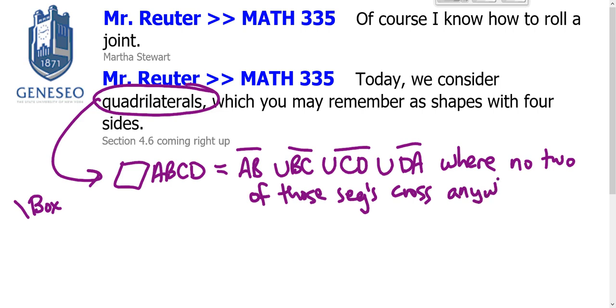Cross anywhere except at an endpoint. That's the key. ABCD is a quadrilateral if those four segments can be drawn and no two of those segments cross except at an endpoint. That's the idea.